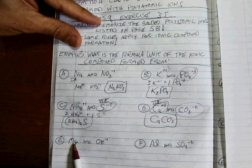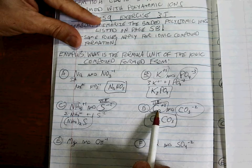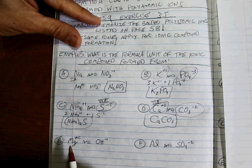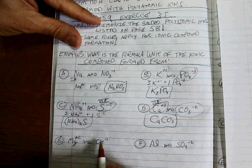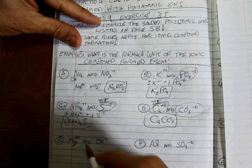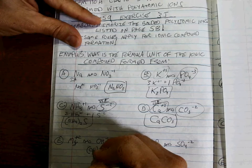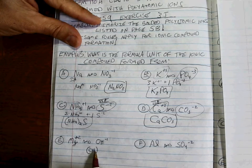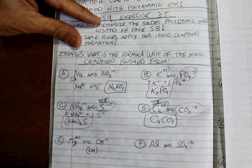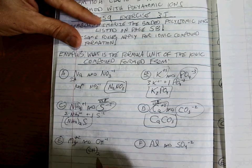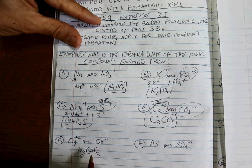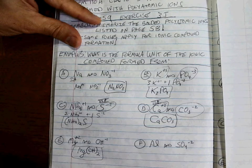Magnesium is in the same group as calcium — Group 2A — so it makes a +2. We've got a +2 and a -1, so clearly we need two hydroxides to even out the +2. You put parentheses around OH because the O and H have to stay attached — that's what a polyatomic ion does. A subscript 2 tells you there are two of them. The formula is Mg(OH)2, magnesium hydroxide.